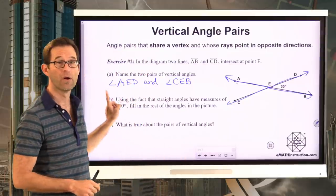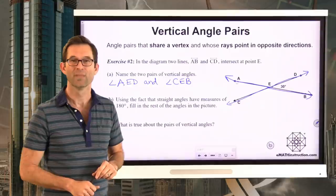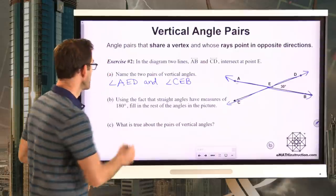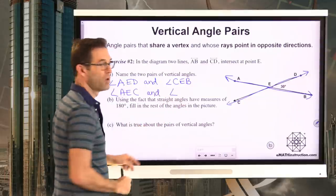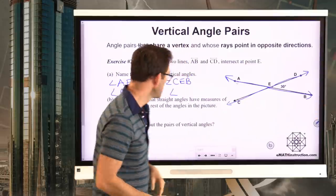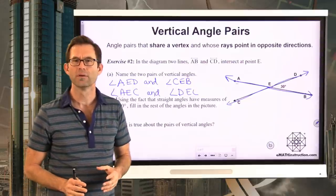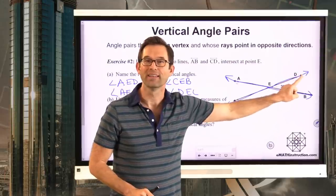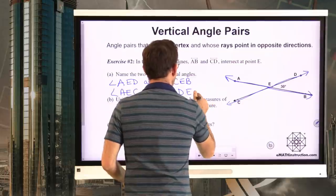What's the other vertical angle pair? Pause the video and write that down. The other pair is angle AEC and angle DEB. They're both vertical angle pairs. My bad eyesight — it's DEB, not DEC. Sorry about that.